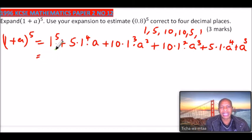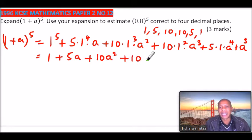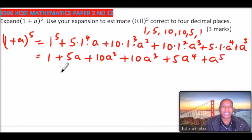So that is the expansion which we can write as 1 plus 5a plus 10a^2 plus 10a^3 plus 5a^4 plus a^5. So that's what you get.